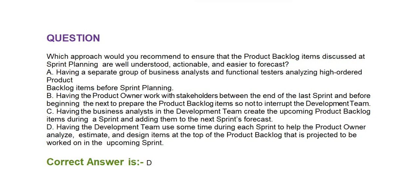Option C: having the business analysts in the development team create the upcoming product backlog items during a sprint and adding them to the next sprint's forecast. Option D: having the development team use some time during each sprint to help the product owner analyze, estimate, and design items at the top of the product backlog that are projected to be worked on in the upcoming sprint.